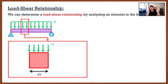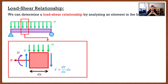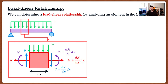Since we took an element out of our beam we essentially cut it on both sides. On the left-hand side we show its internal forces: a shear force going up, a moment, and an axial load. On the right-hand side, the shear force is equal to the shear on the left plus the change in shear over the length of the element — that's (dV/dx)·dx, slope times distance. We do the same for moment: M plus (dM/dx)·dx. And similarly for the axial load: N plus (dN/dx)·dx.